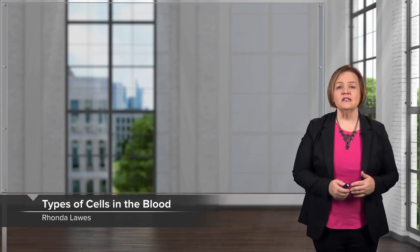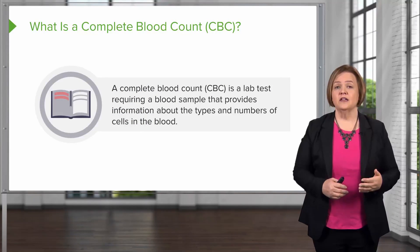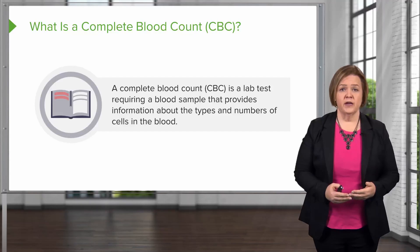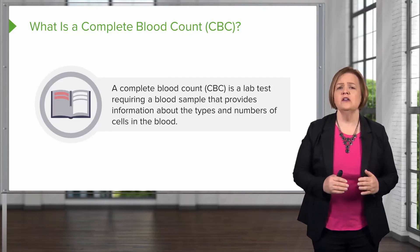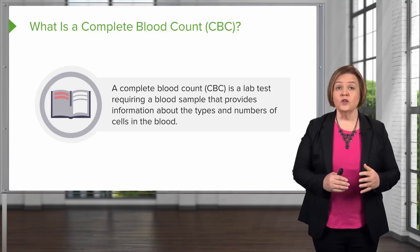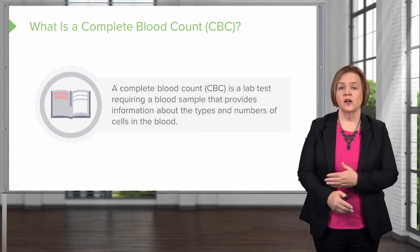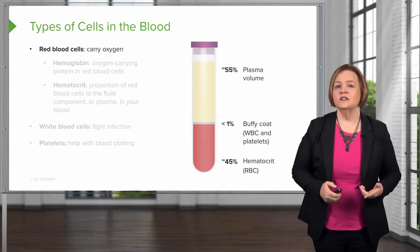Welcome to our video series on interpreting lab values. In this one, we're going to take a look at the complete blood count. We usually shorten that to CBC, so when you see a physician's order it will say CBC, because we shorten everything in healthcare. A CBC is a lab test — you'll have to get a blood sample from your patient, but it's going to give us a ton of information about the types and numbers of cells in the blood. So let's take a look at what's involved in a CBC.